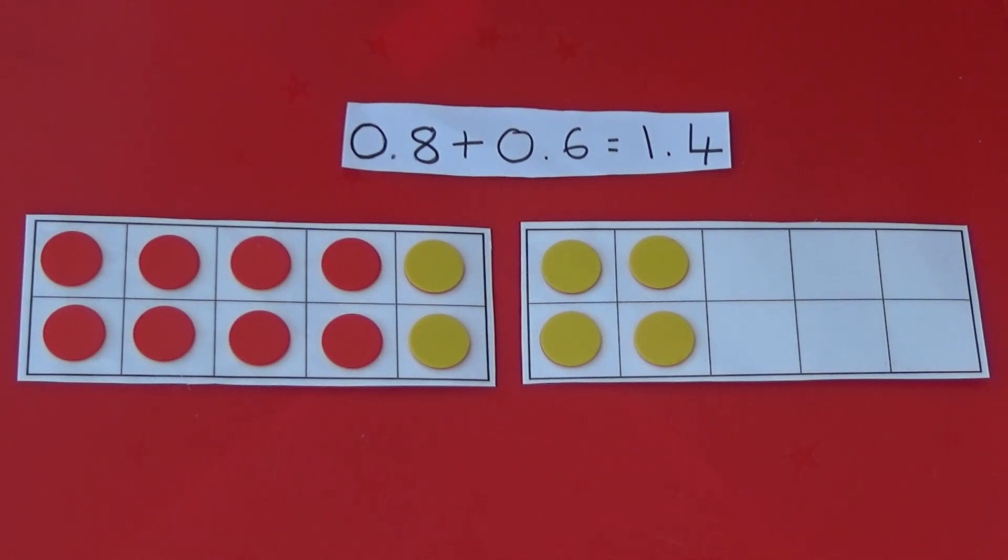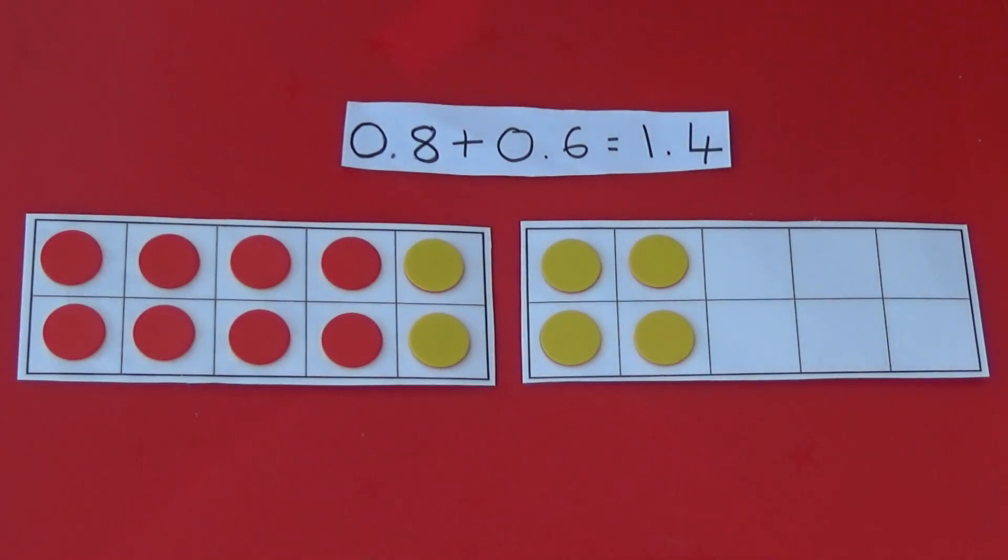I have set out eight-tenths or 0.8 as red counters. I have then set out six-tenths or 0.6 as yellow counters. We can see that 0.8 add 0.6 is one whole and four-tenths or 1.4.